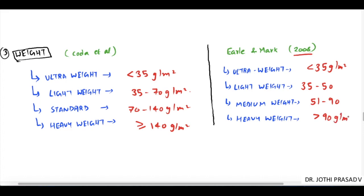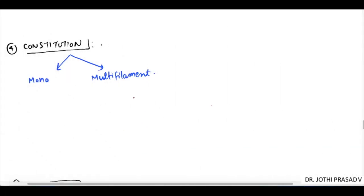Based on constitution, meshes are classified into mono and multifilament, with multifilament having the disadvantage of increased chance of harboring microorganisms and increased risk of infection.